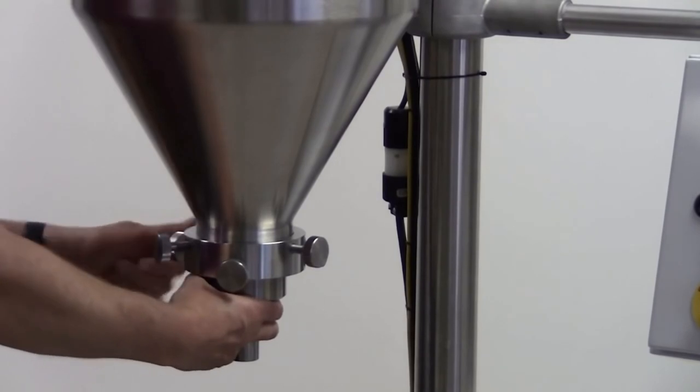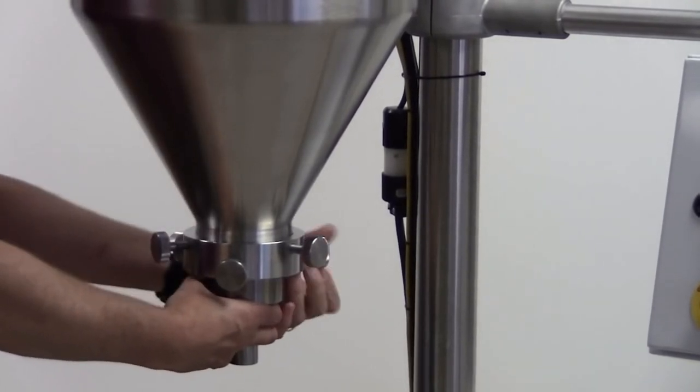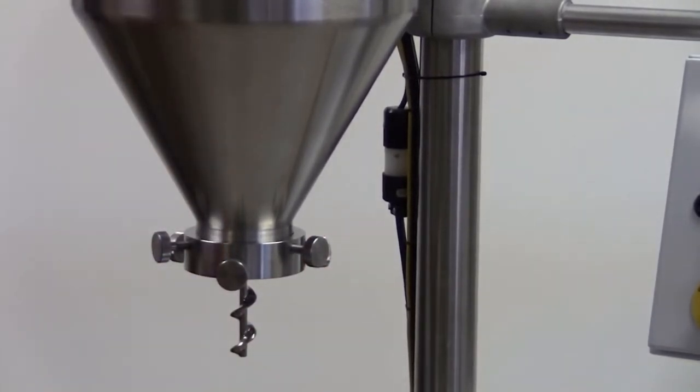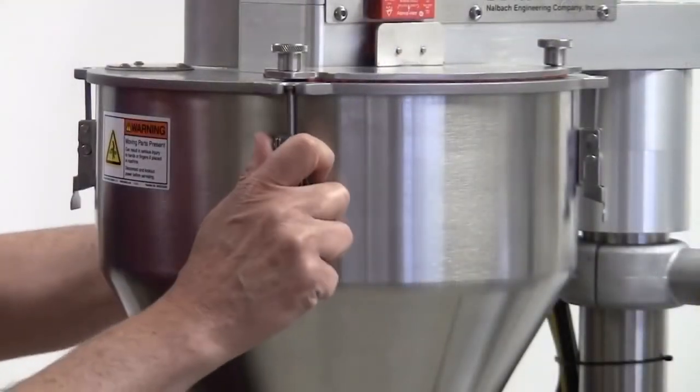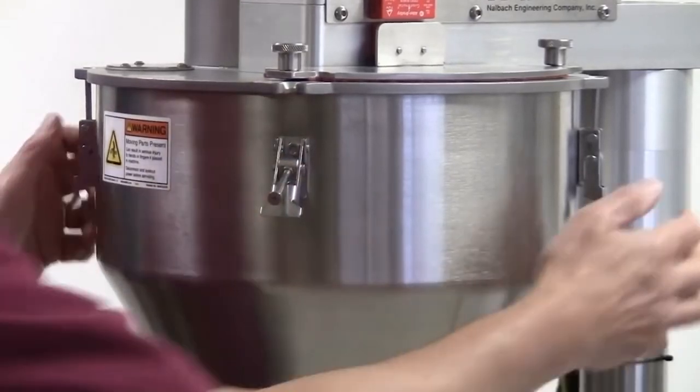Naubach's self-centering funnel system virtually eliminates the need to adjust and center the auger of the tooling within the funnel after each changeover or cleaning, saving as much as 20 minutes of production time.